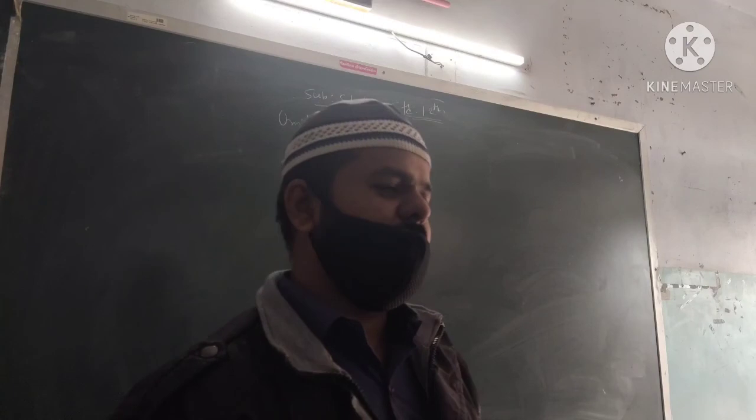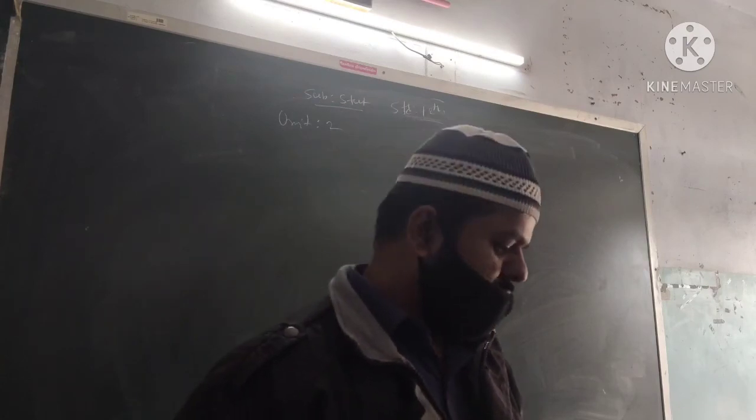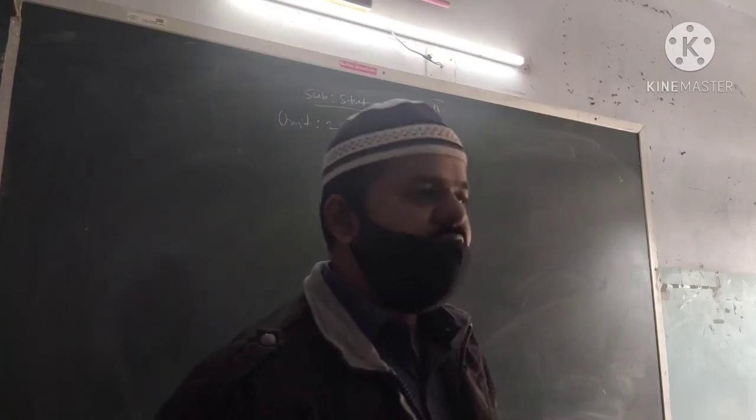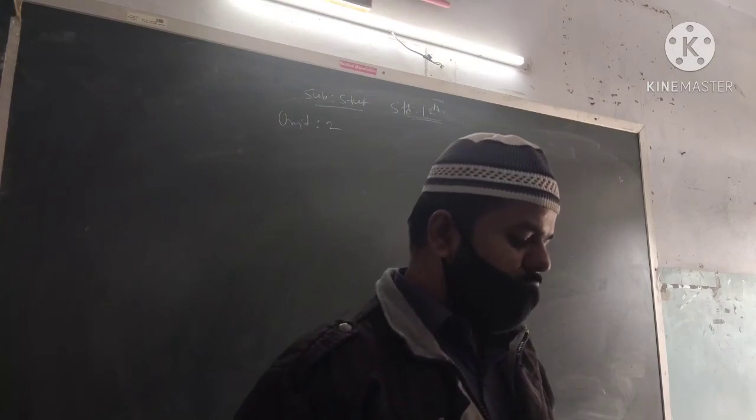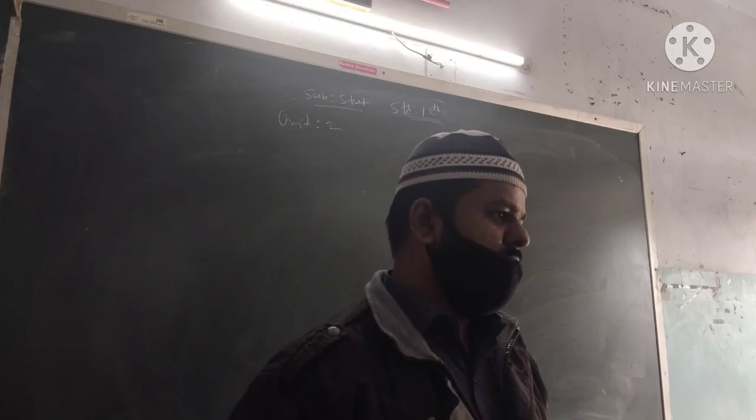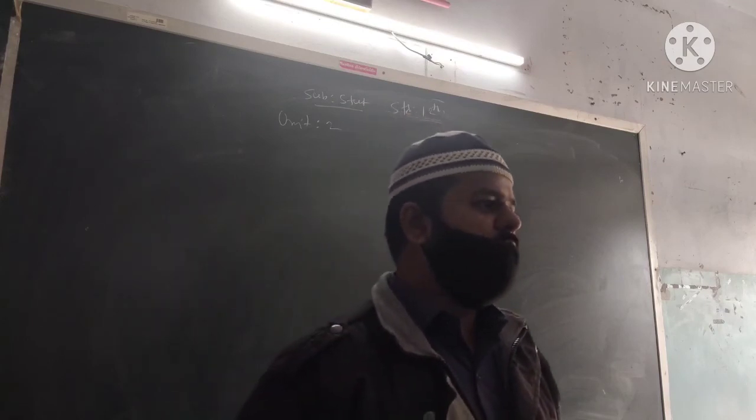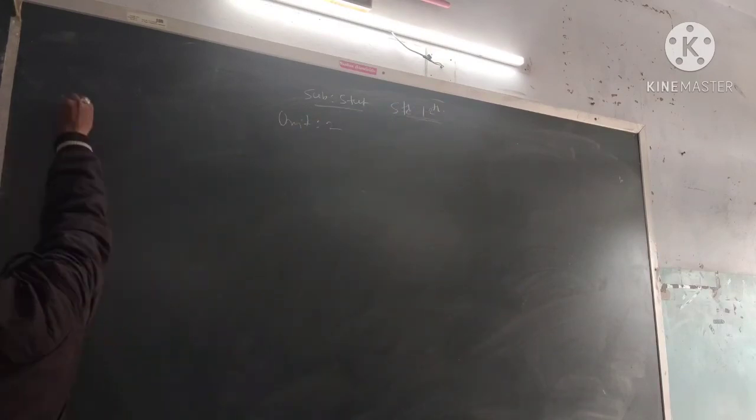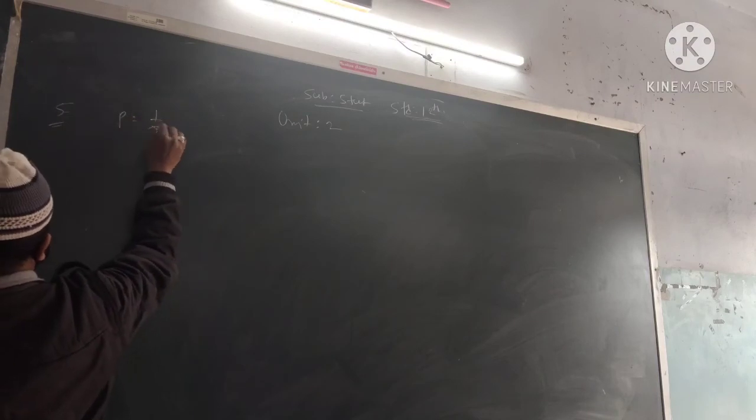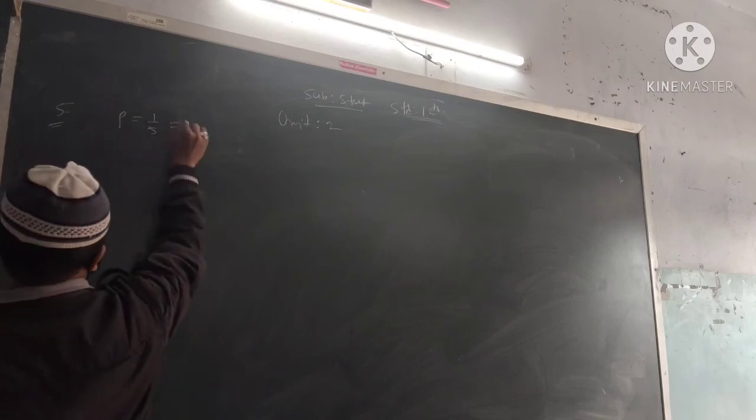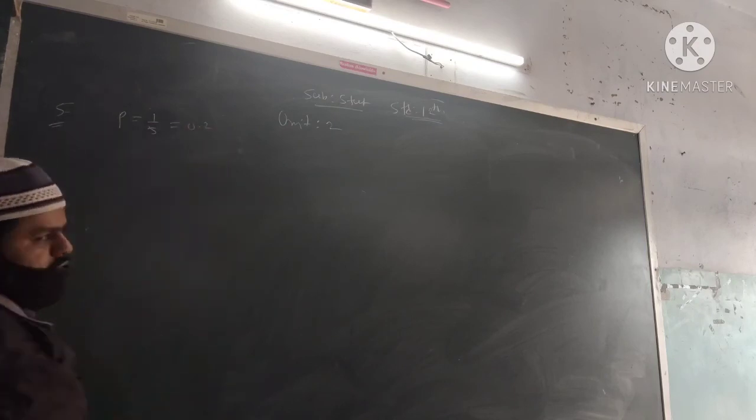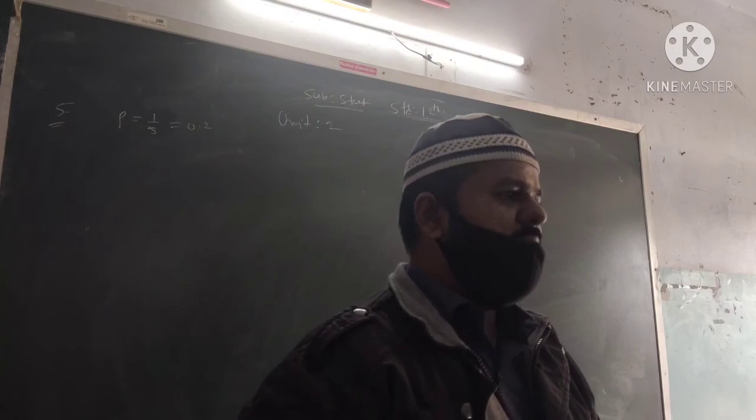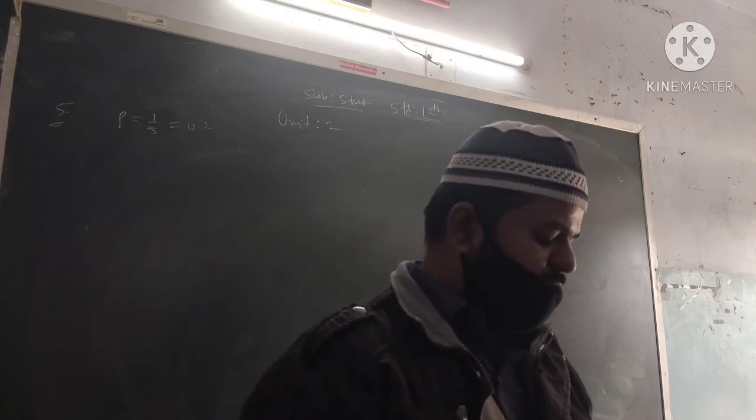Hello students, today we will learn subject stats chapter number 2, random variable and discrete probability distribution. Last time we had section E sum number 4, today we will do sum number 5. Here is the question: the probability that a bomb dropped from a plane over a bridge will hit the bridge is 1 upon 5. P equals 1 upon 5, which is 0.2.